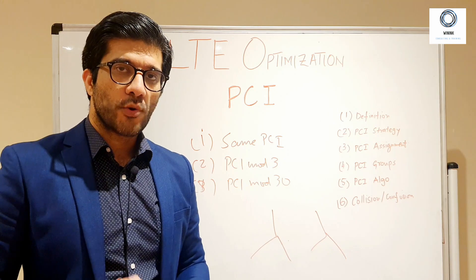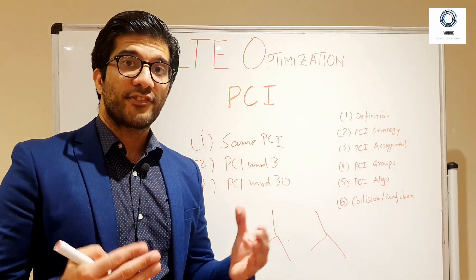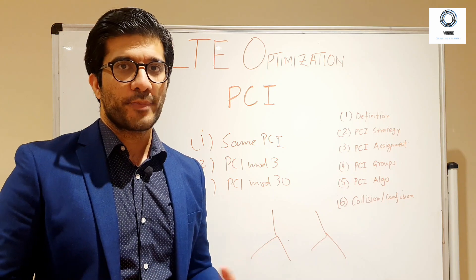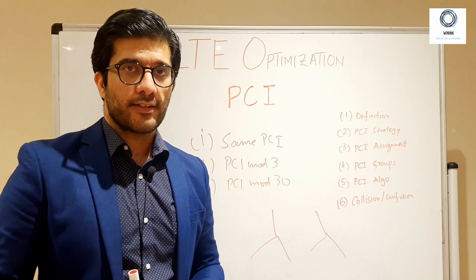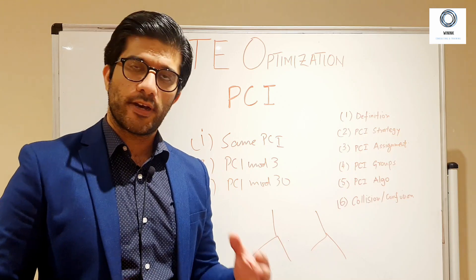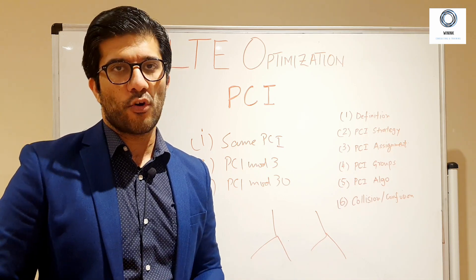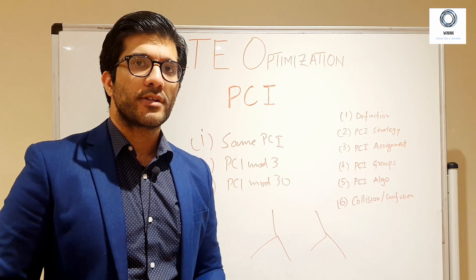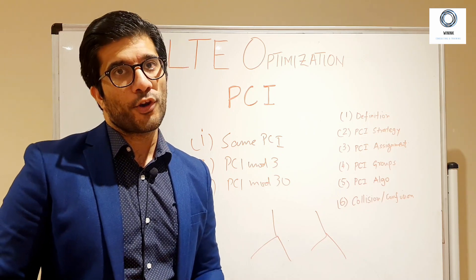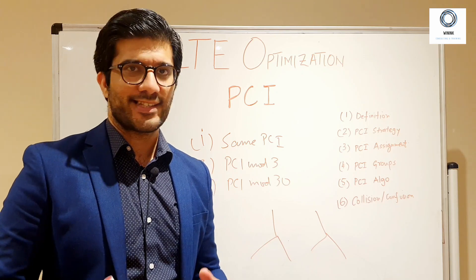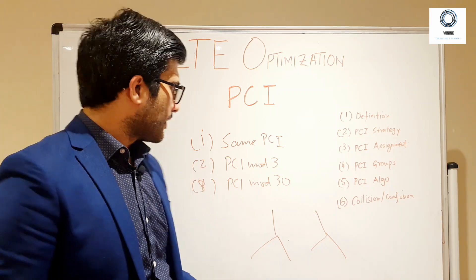Strategy number two is PCI mod 3. PCI mod 3 means that if you divide your PCI by three, the remainder is your PCI mod 3 value. For example, if your PCI is 26 and you divide by three, your remainder is two. Sectors that are adjacent, looking at the same location, or on the same site should not share the same PCI mod 3 value. This is very important for MIMO networks using 2x2, 4x4, or any MIMO configuration, and also for dense networks such as in a CBD.